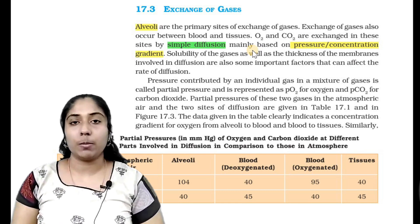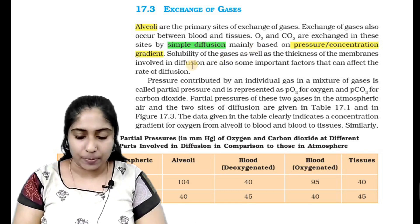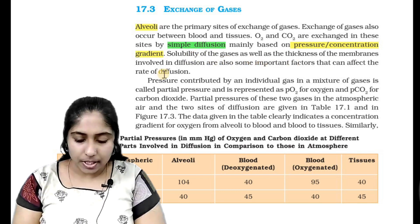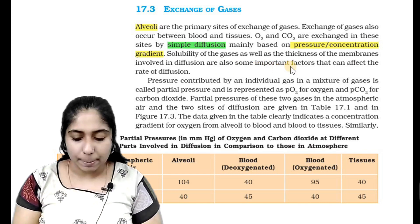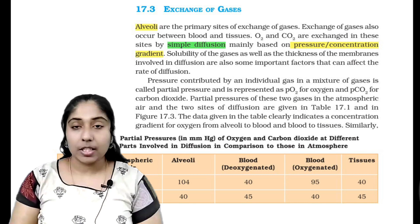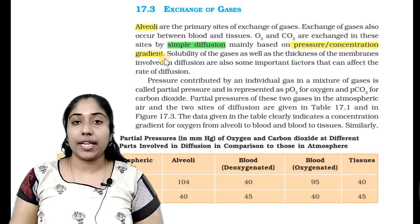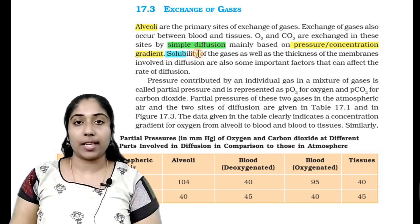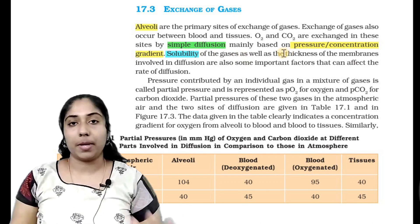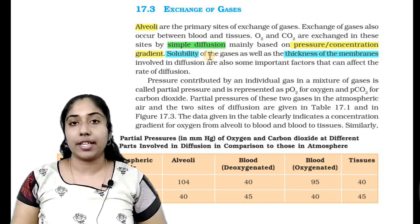Carbon dioxide and oxygen are exchanged. The solubility of the gases as well as the thickness of the membrane involved in the diffusion are important factors that can affect the rate of diffusion. This expression is called the concentration gradient or the exchange of gases, and an increase in the value of the concentration gradient affects the direction of exchange.